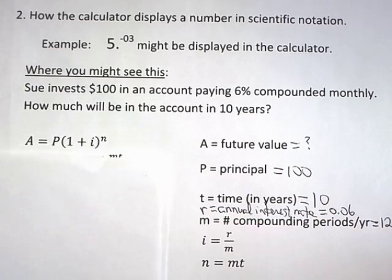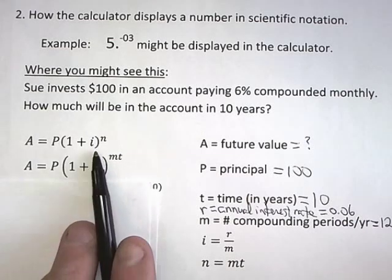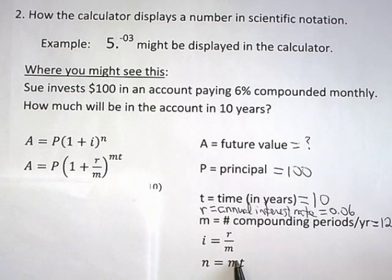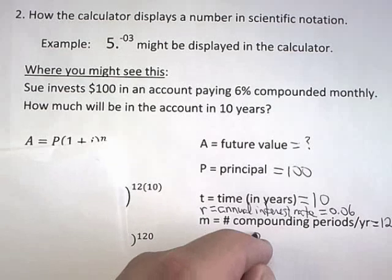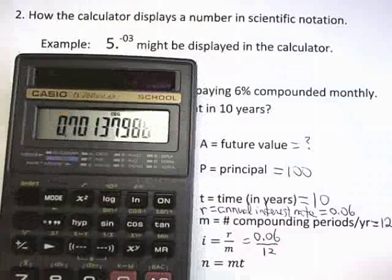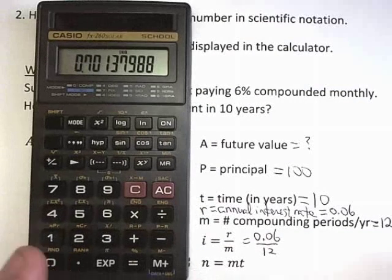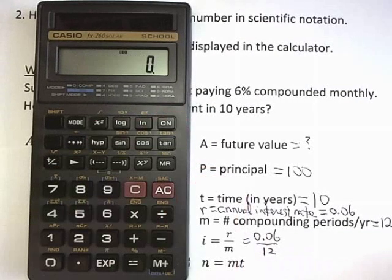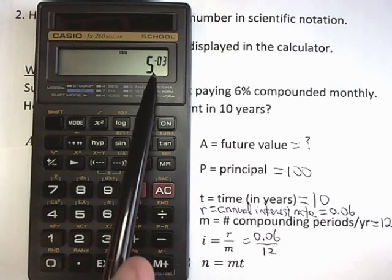So as you know the formula itself has little i which is r over m in it. So we have to figure out what r over m is. So r of course is zero point zero six and m is equal to 12. Now watch what happens when I do this calculation. I put in point zero six divided by 12 equals.